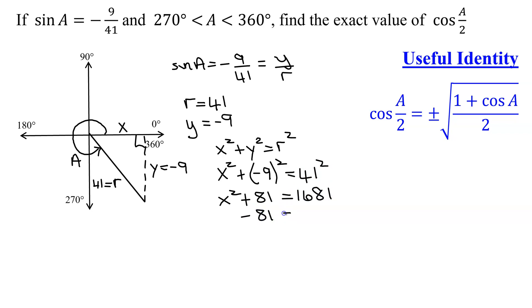I need to subtract 81 from both sides. I get X squared equals 1,600. So X equals plus or minus the square root of 1,600, which equals plus or minus 40. However, as A terminates in quadrant 4, we know that X must be a positive number. So X equals positive 40 as angle A is in quadrant 4.